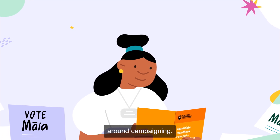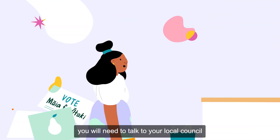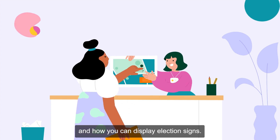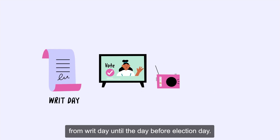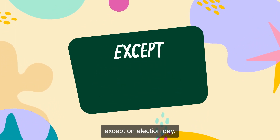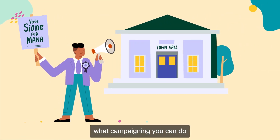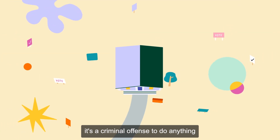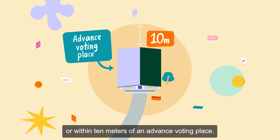Now let's look at some of the rules and limits put in place around campaigning. When it comes time to decide where to put your election signage, you will need to talk to your local council, as they are responsible for regulating when, where and how you can display election signs. TV and radio election ads can only be broadcast from writ day until the day before election day. All other election advertising can be published at any time except on election day. There are specific limits put in place around what campaigning you can do once voting starts. Other than wearing a party rosette and clothes in party colours, it's a criminal offence to do anything that can influence voters in, or within 10 metres of, an advance voting place.